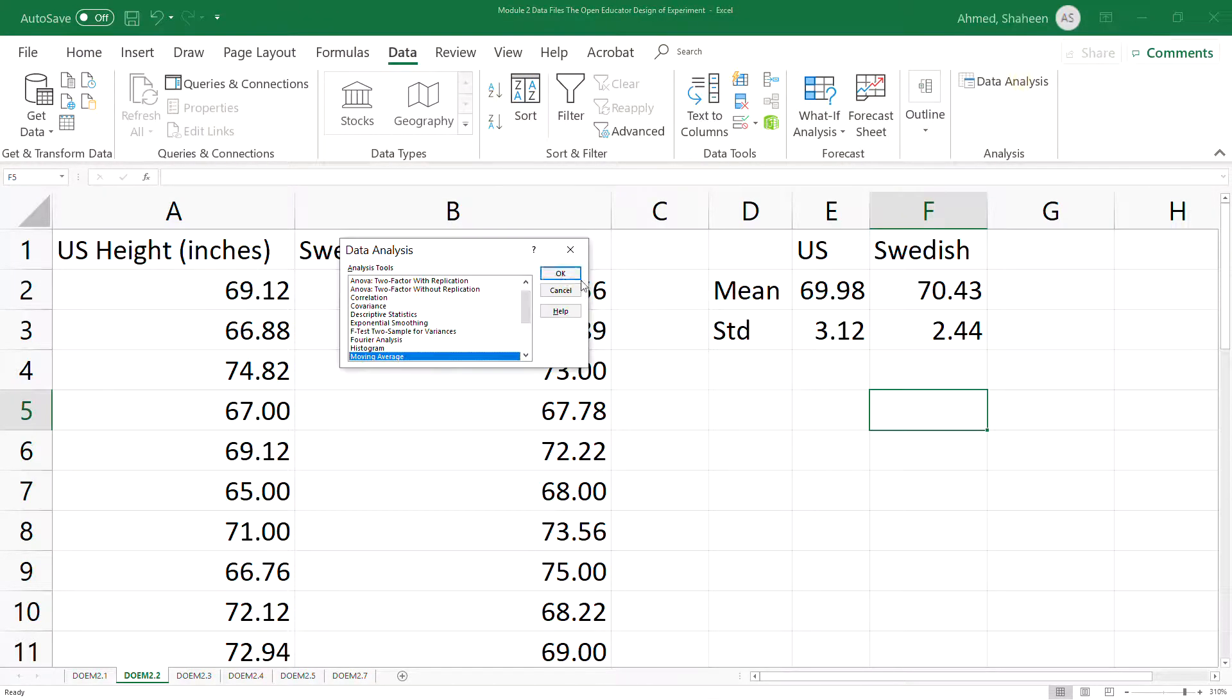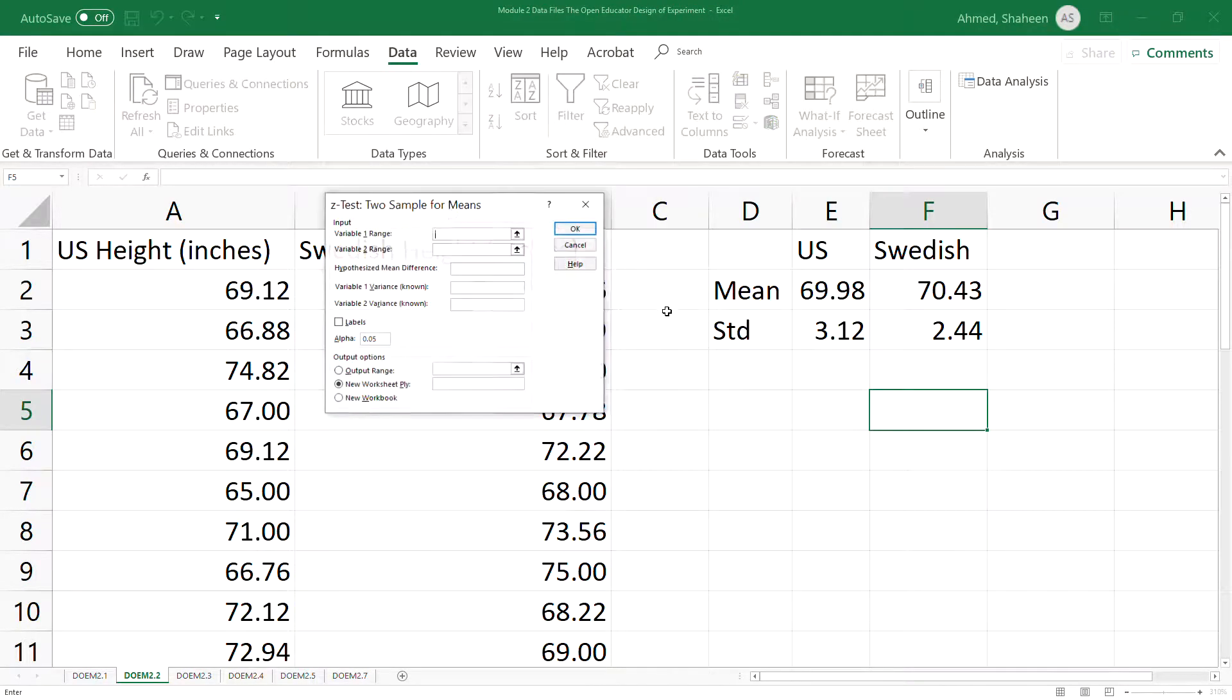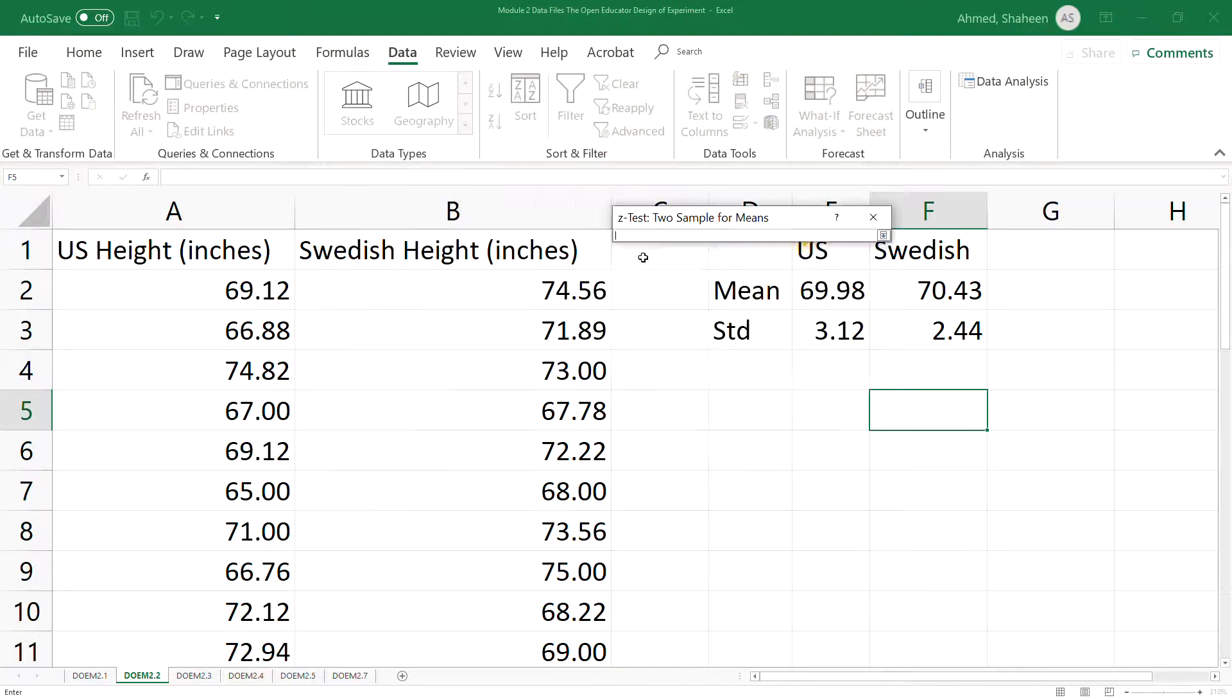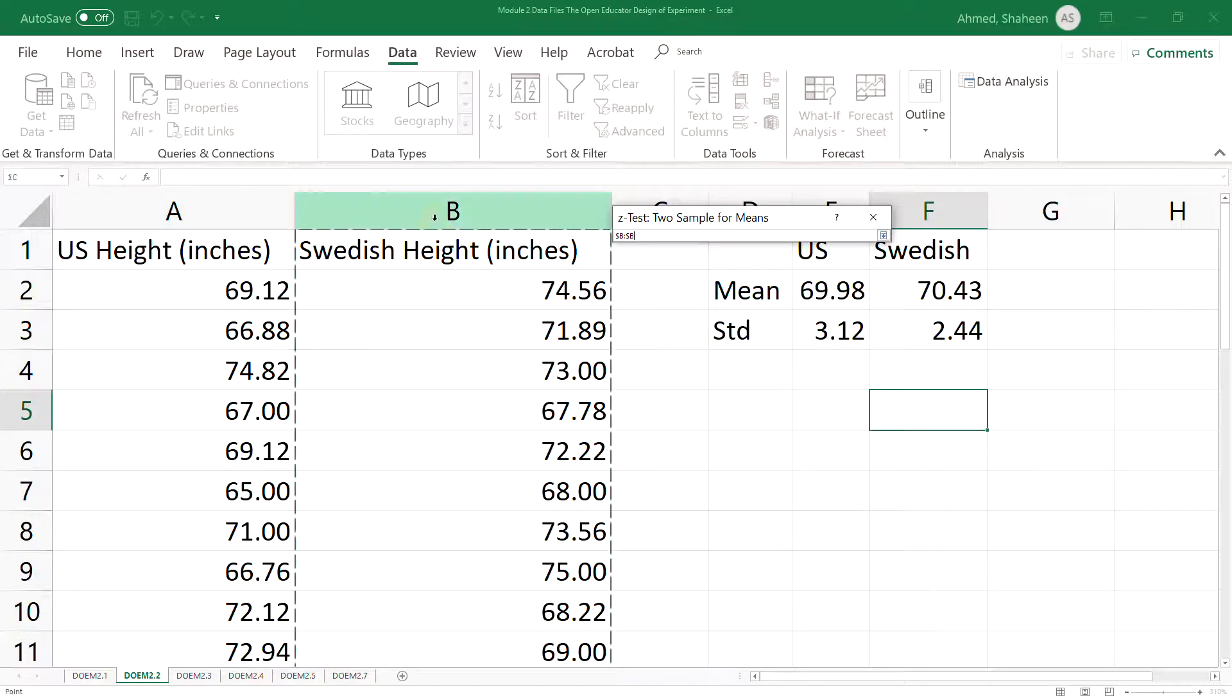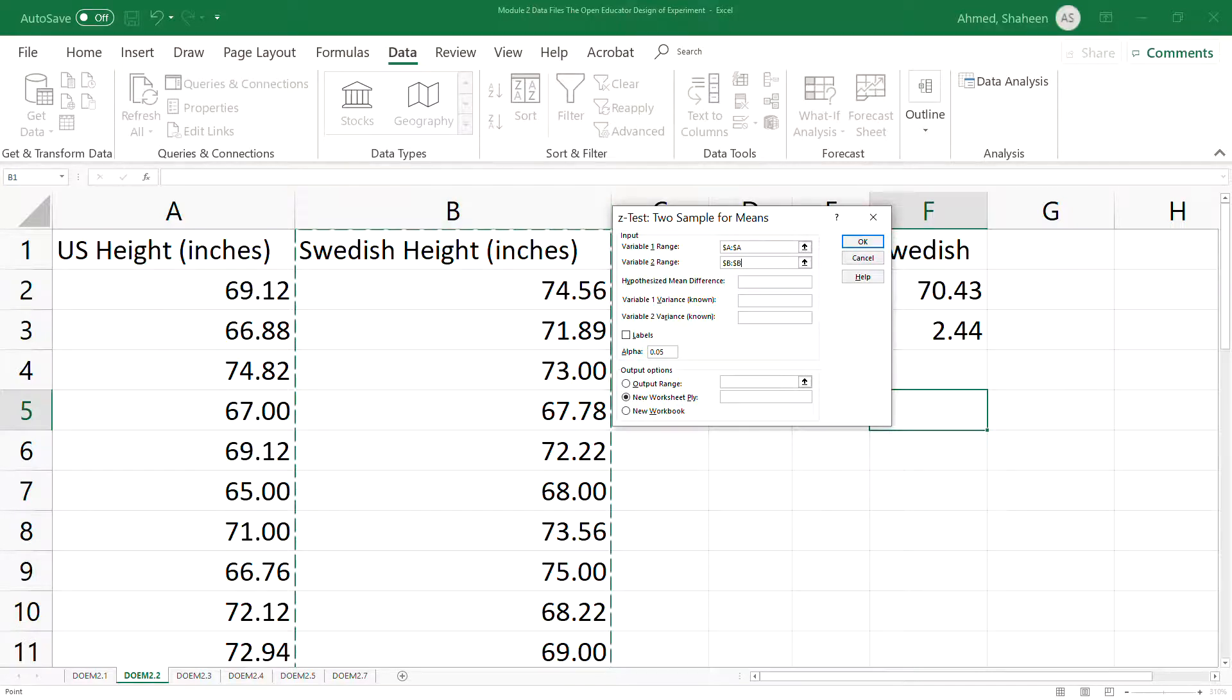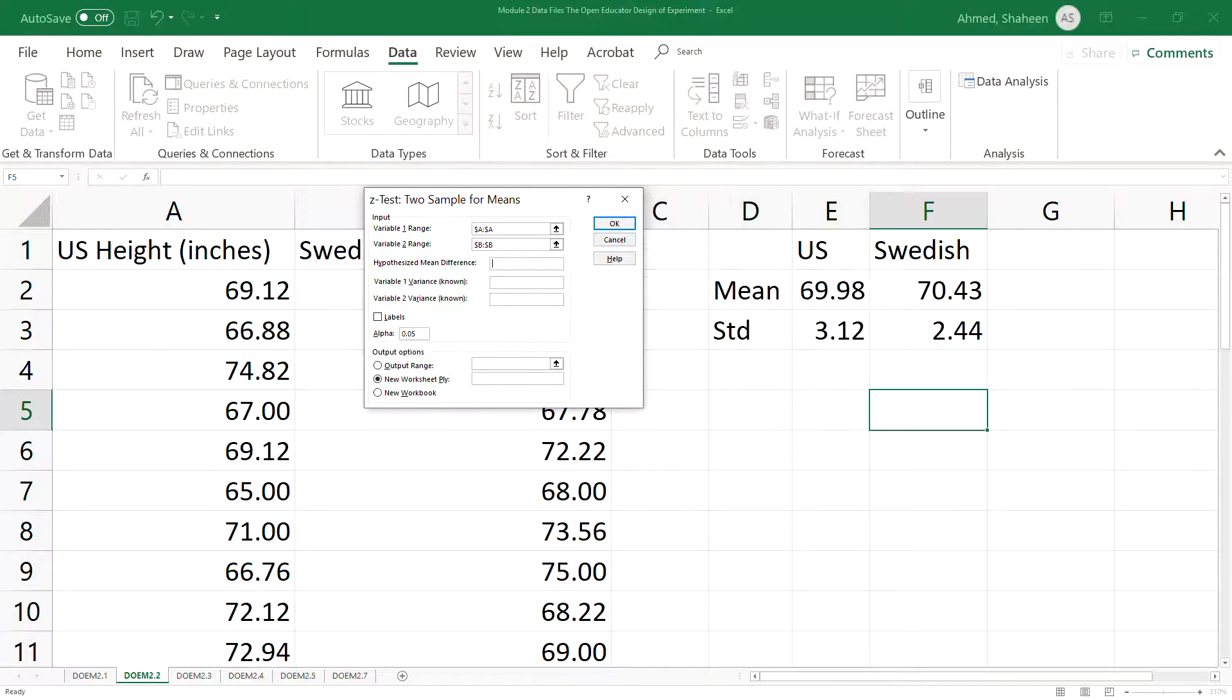Click on the Data tab, find the z-Test: Two Sample for Means, and hit OK. Select the first sample—US height—the second sample—Swedish height—and then the hypothesized mean difference, which we say is zero. For the known variance, we'll type the US male standard deviation and then Swedish male standard deviation. Check Labels if you have levels in your first row of the data set, then hit OK.